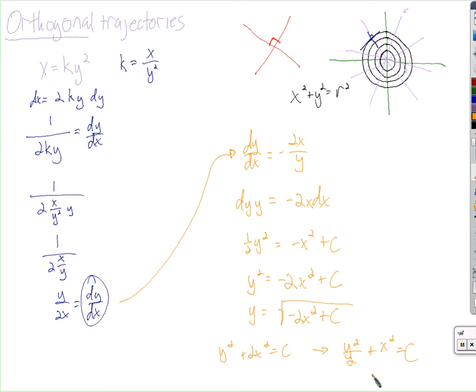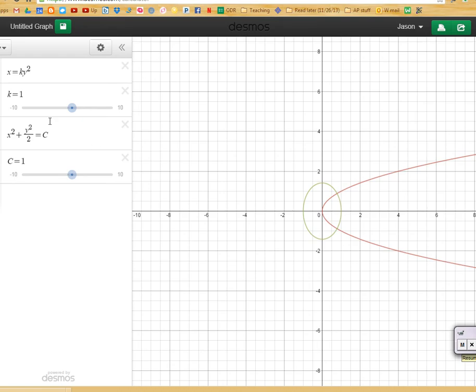And let's take a look at curves that fit this equation and that fit this equation. So you can see that I have all of the possible functions represented, or graphs represented here by x equals ky squared. That was our given function. Here is the equation that defines the set of curves that should be orthogonal, perpendicular to any of these curves at any point.